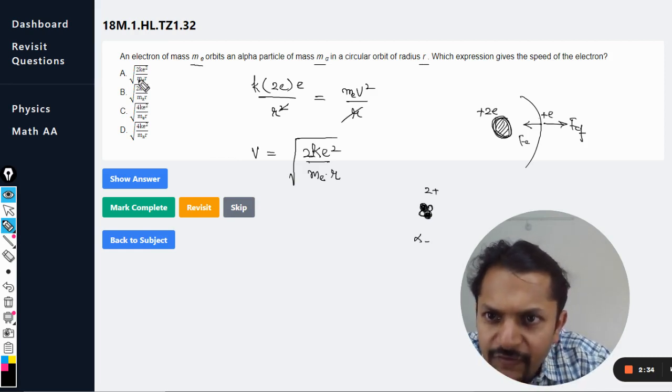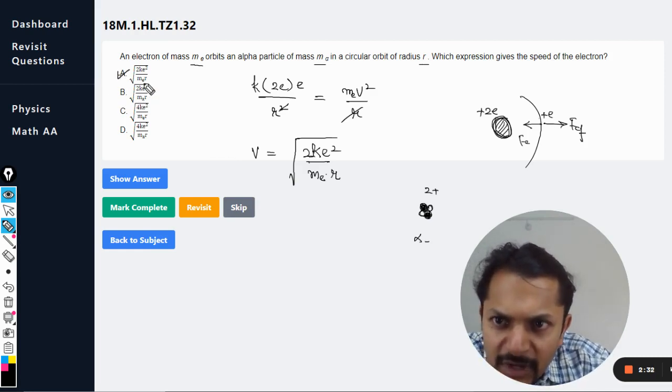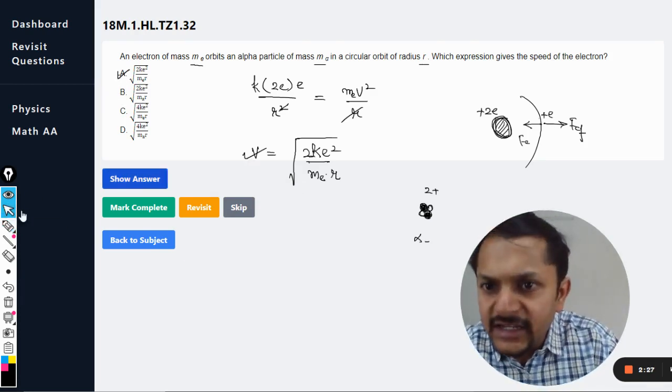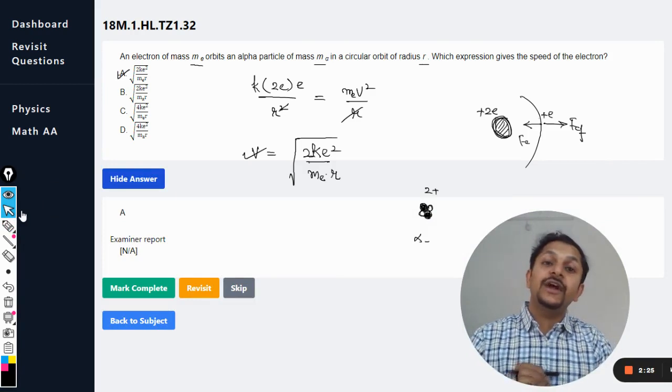In option b it is alpha, so in option a it is mass of electron in the denominator. So yes, the answer will be a. And let us see from the mark scheme, and absolutely correct, the answer is a.